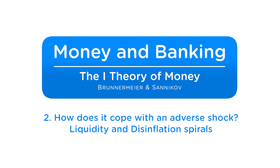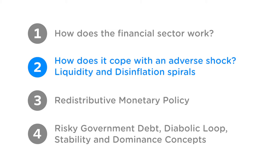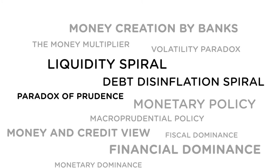Welcome back to the Money in Banking video series. In part two, we will highlight three features of a debt run-up, and then illustrate how a financial economy copes with an adverse shock in a world without central bank interventions. In particular, we will focus on two adverse feedback loops: the liquidity spiral and the disinflation spiral. You will also learn about the new paradox of prudence.